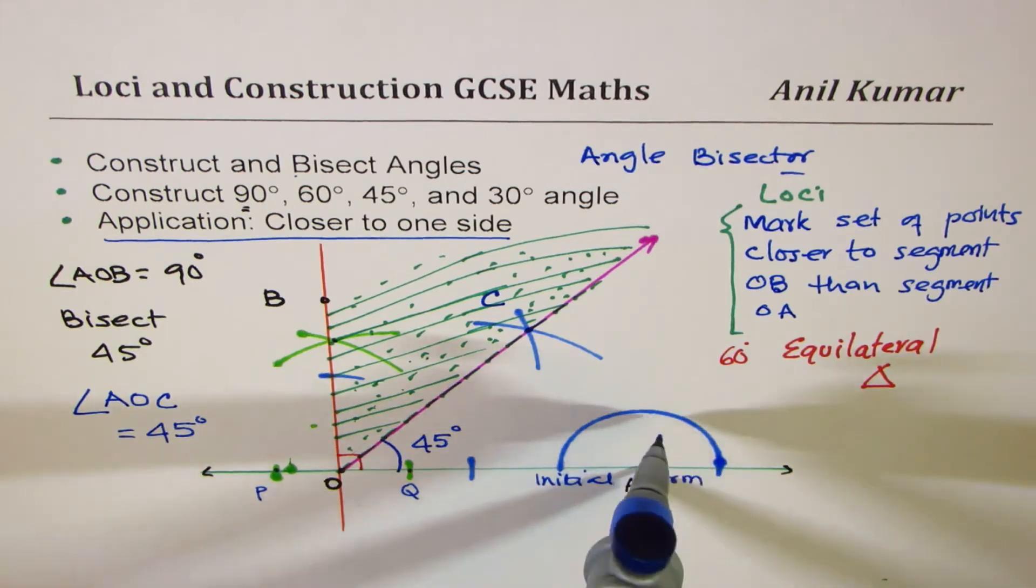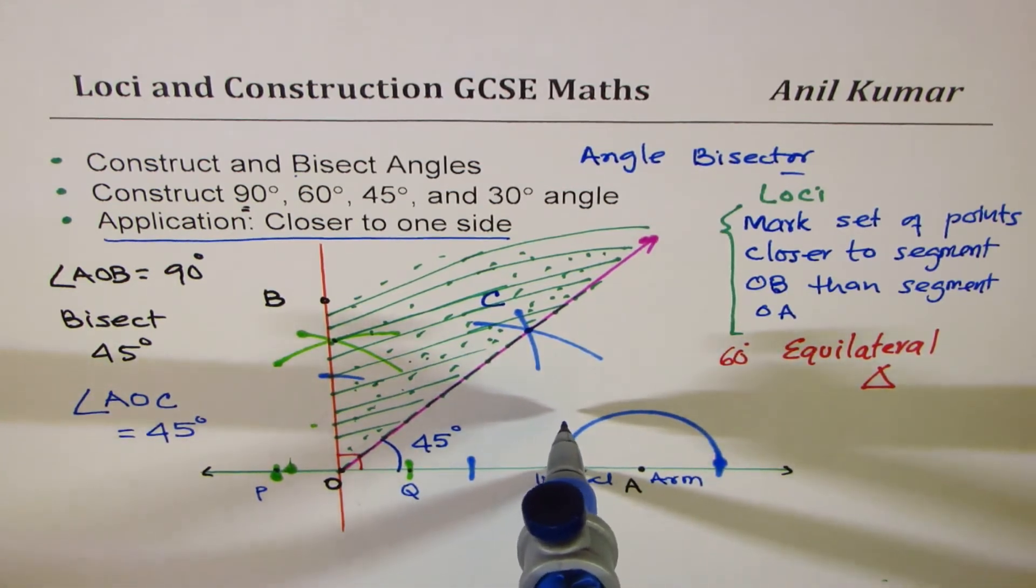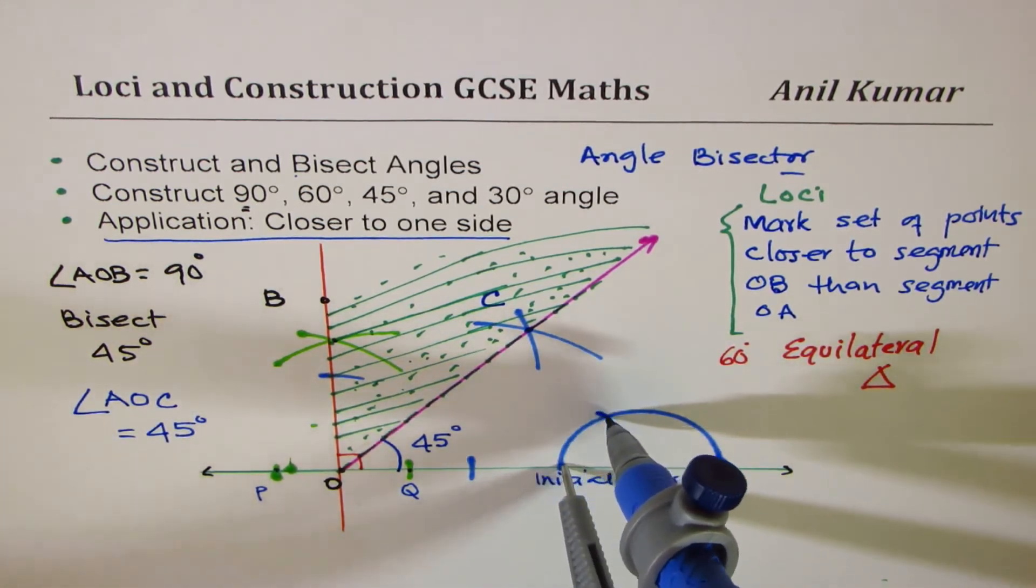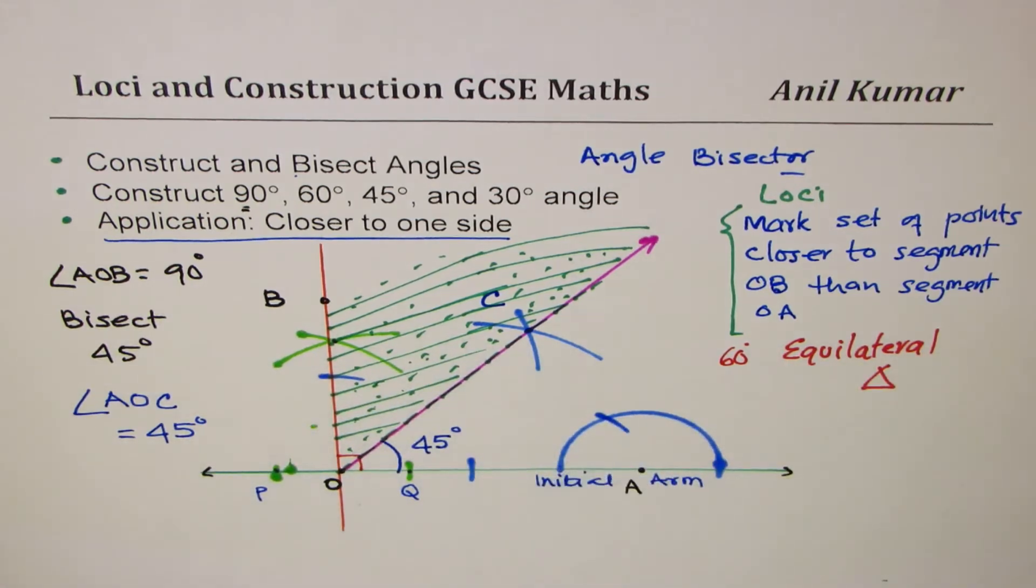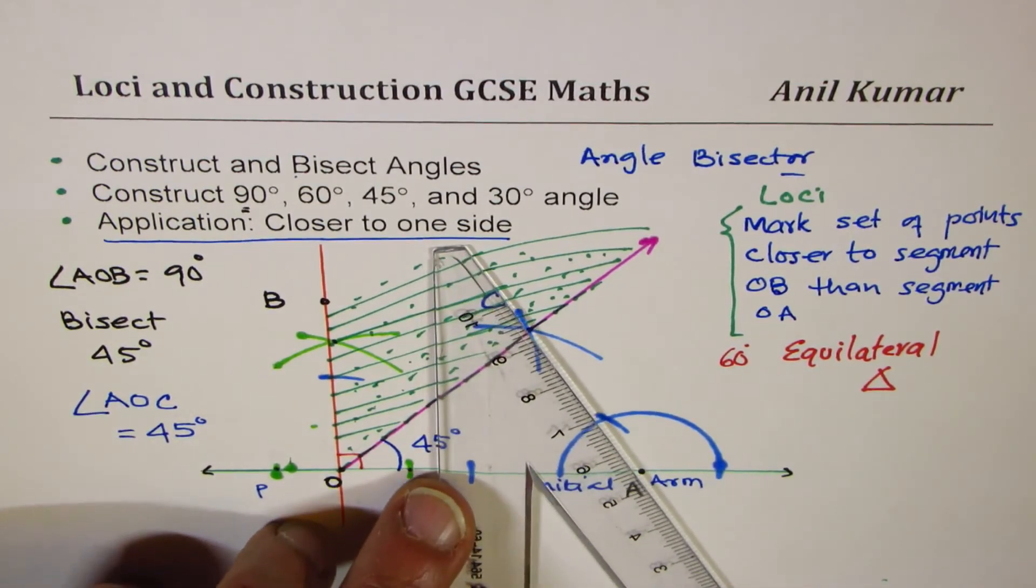You have to cross the line. Now with the same arc, what we are going to do is we can place it on one of these sides and mark another arc. So once you do that, this time once you do this, you get 60 degrees.